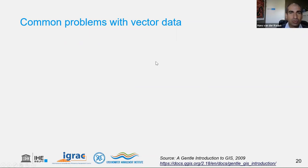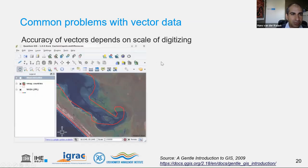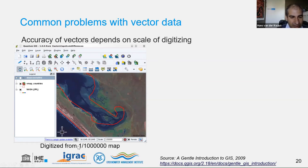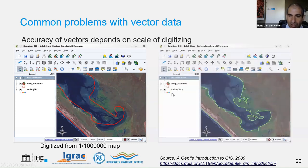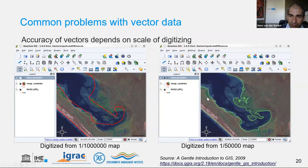Vector data has common problems to solve before using it. First, accuracy depends on the scale at which it was digitized. Data digitized from a 1:1,000,000 map shows generalized, less accurate boundaries. When digitized from a 1:50,000 map, the boundary is much more accurate. The resolution of the background map used during digitizing determines the quality of your vector data.